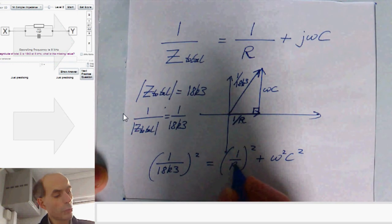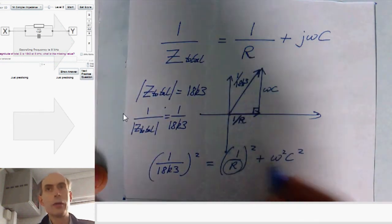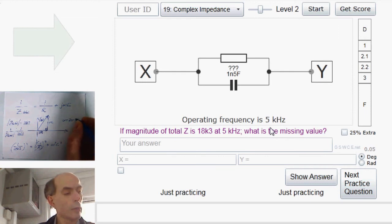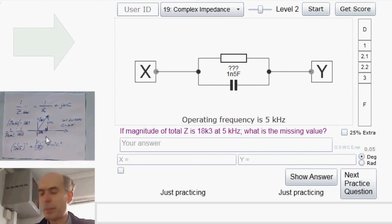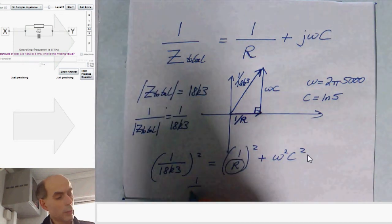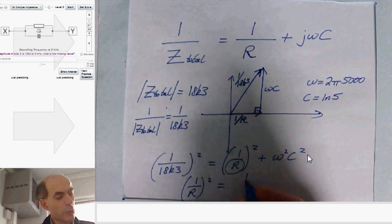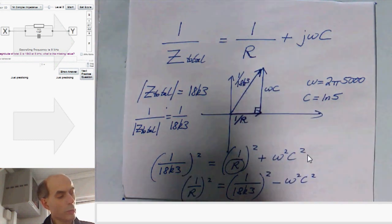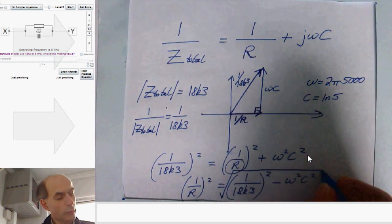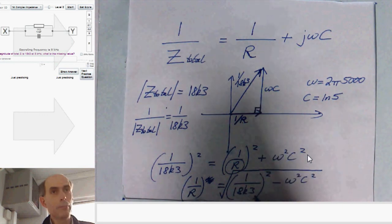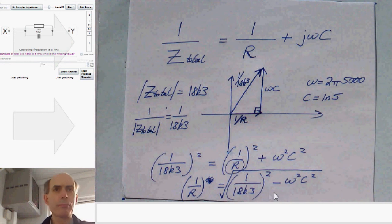1 over 18k3 squared must be 1 over R squared plus omega squared C squared. And from that, I should be able to work out R because everything else here is known. I know omega, just a quick check, omega is 2 times pi times 5 kHz. And I know C, it's 1.5 nanofarads. Therefore, all I have to do is rearrange this formula in terms of R. Clearly, 1 over R squared is going to be 1 over 18k3 all squared minus omega squared times C squared. So if I take the square root of that lot, that should give me 1 over R. And to get my final value of R, I just have to take this square root and take the inverse of it. And the calculator should be able to handle that. Let's give it a go.